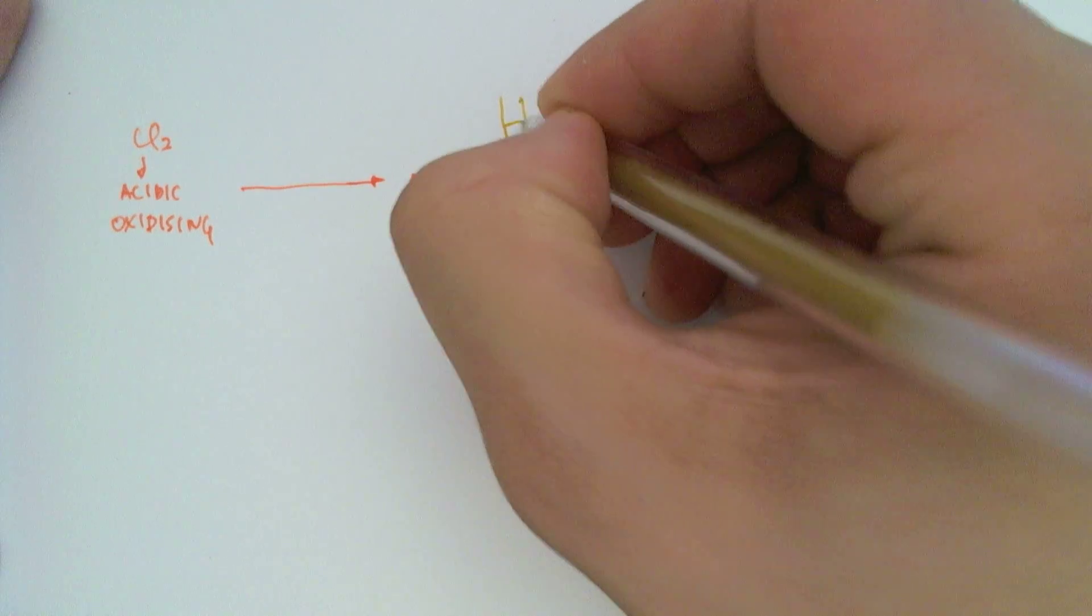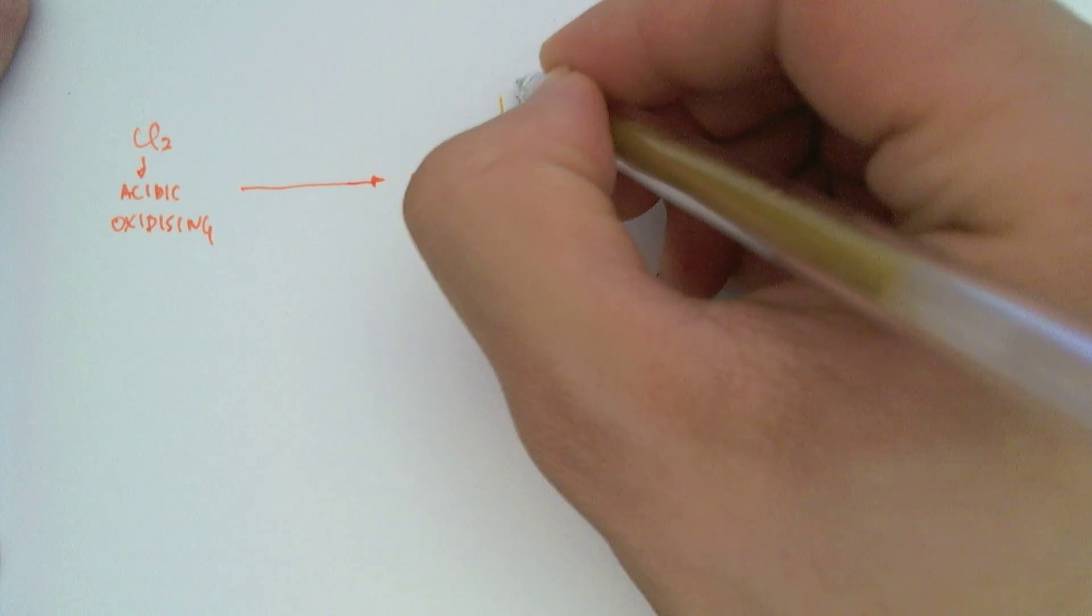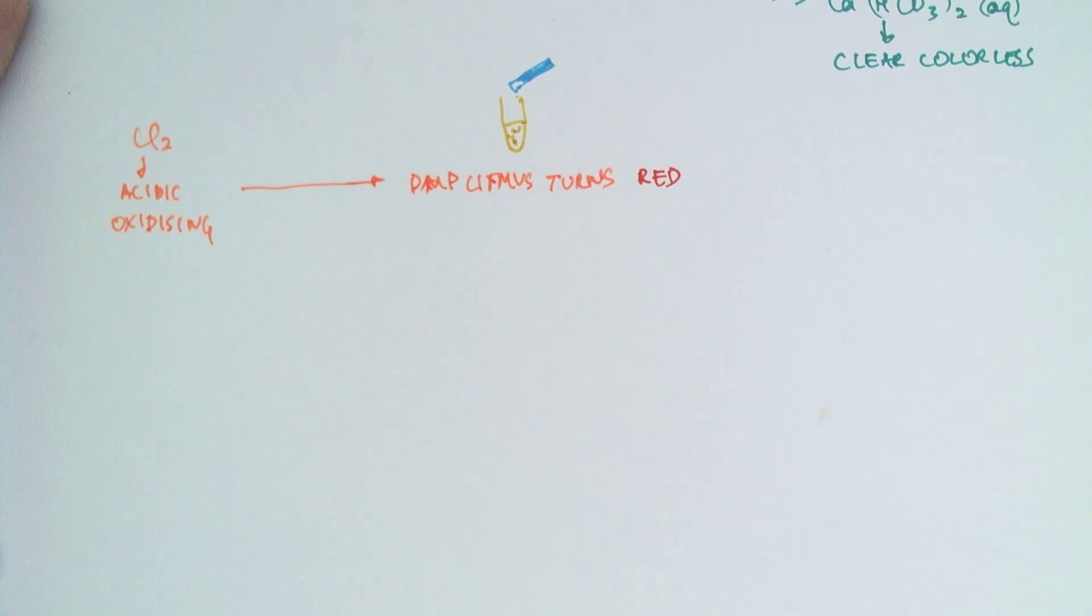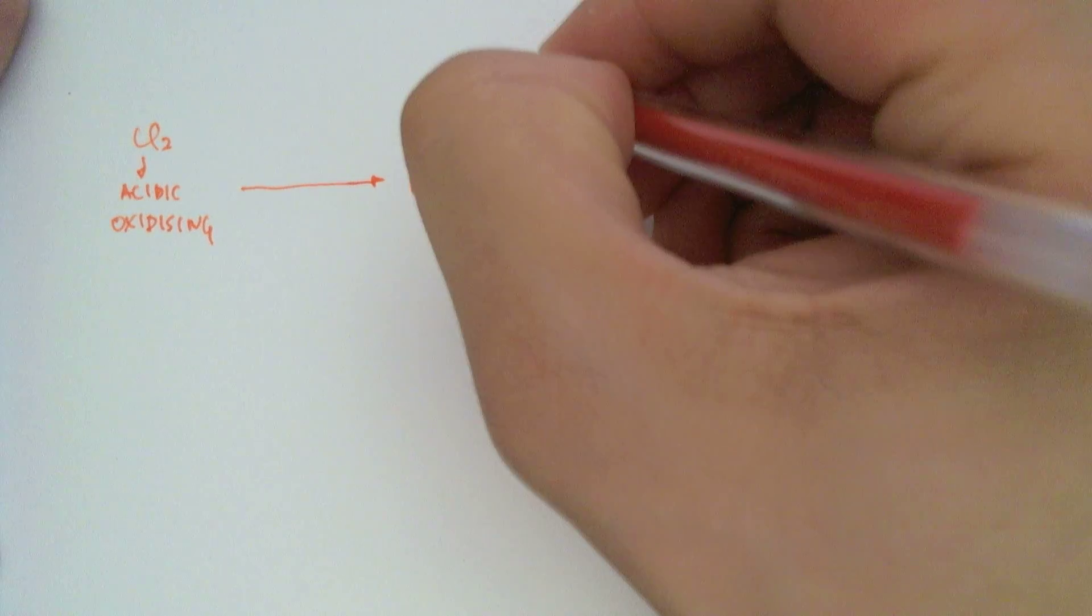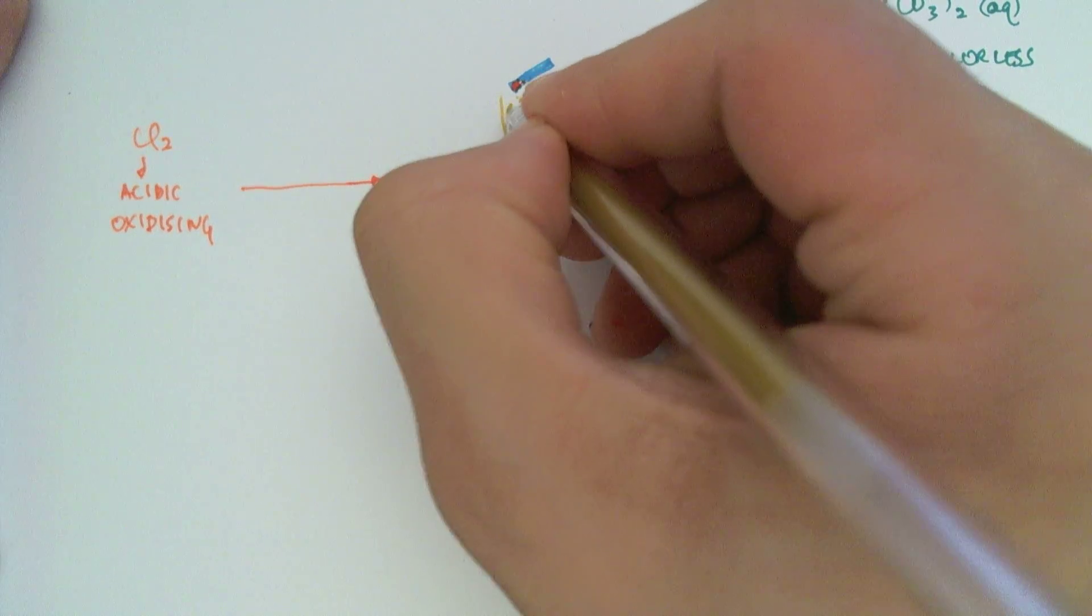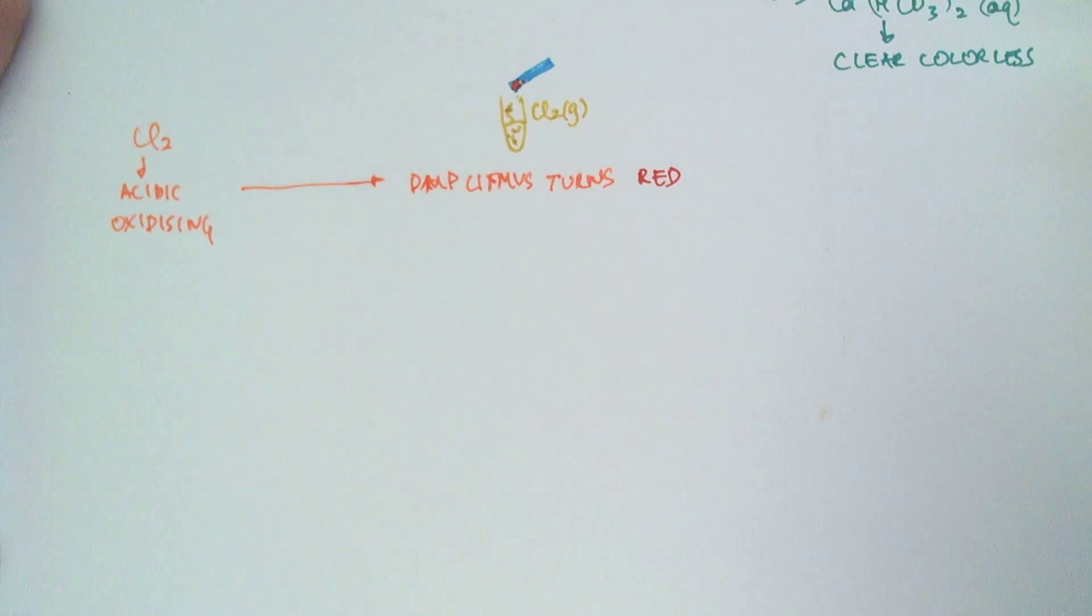So let me just draw a test tube with the reaction going on here. And if you have some blue litmus paper, the tip of it is going to turn red because of the chlorine gas being released there.